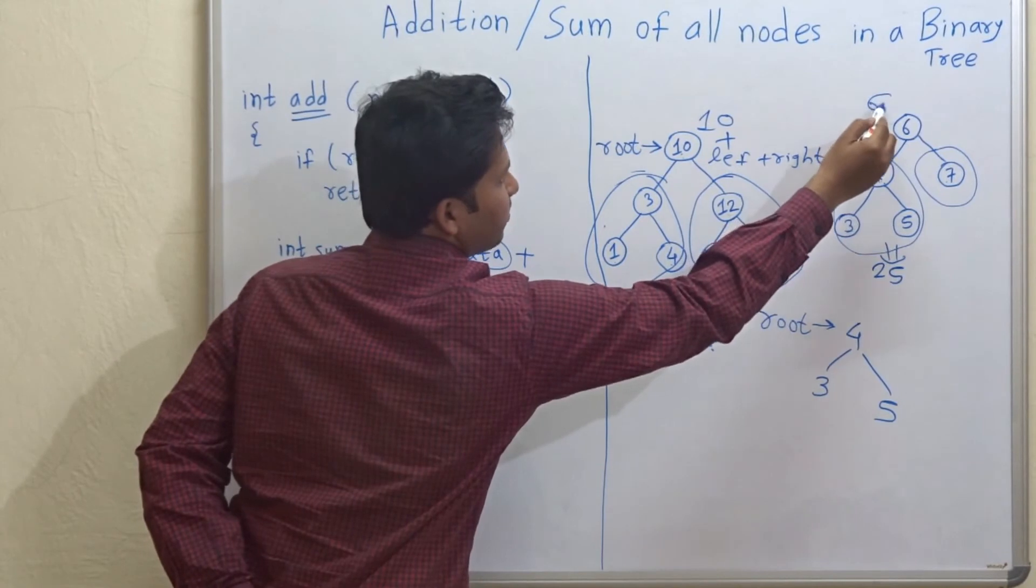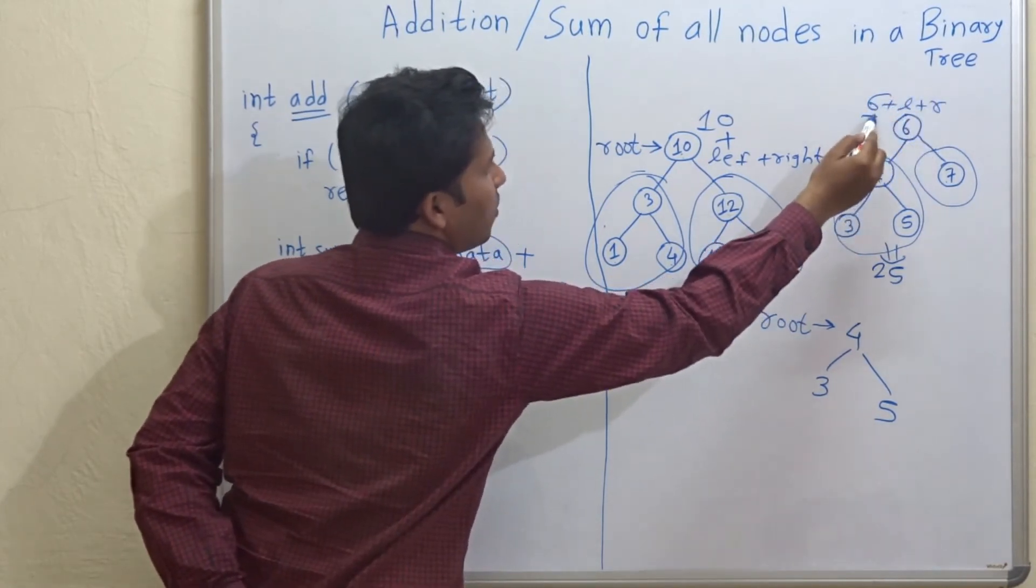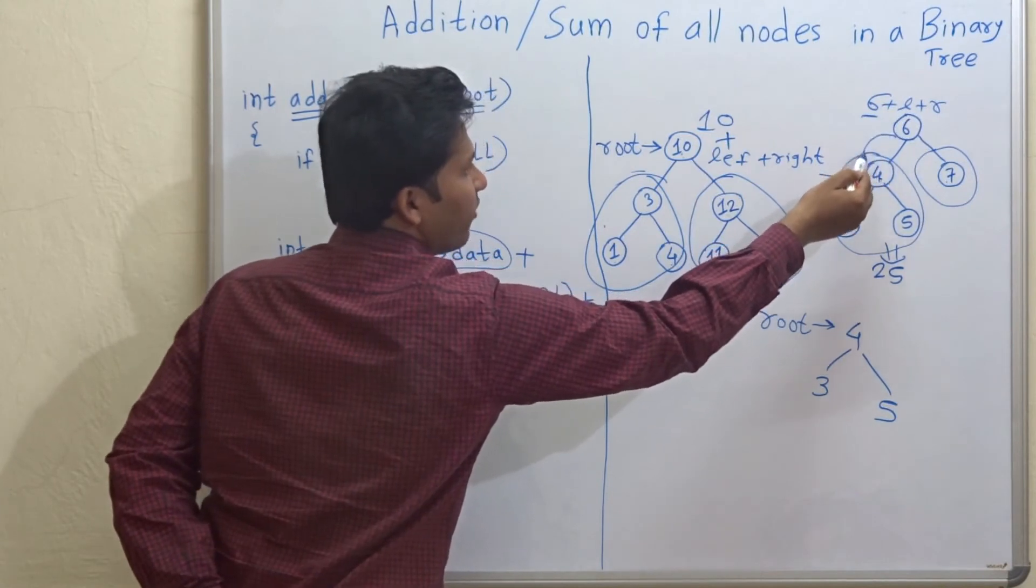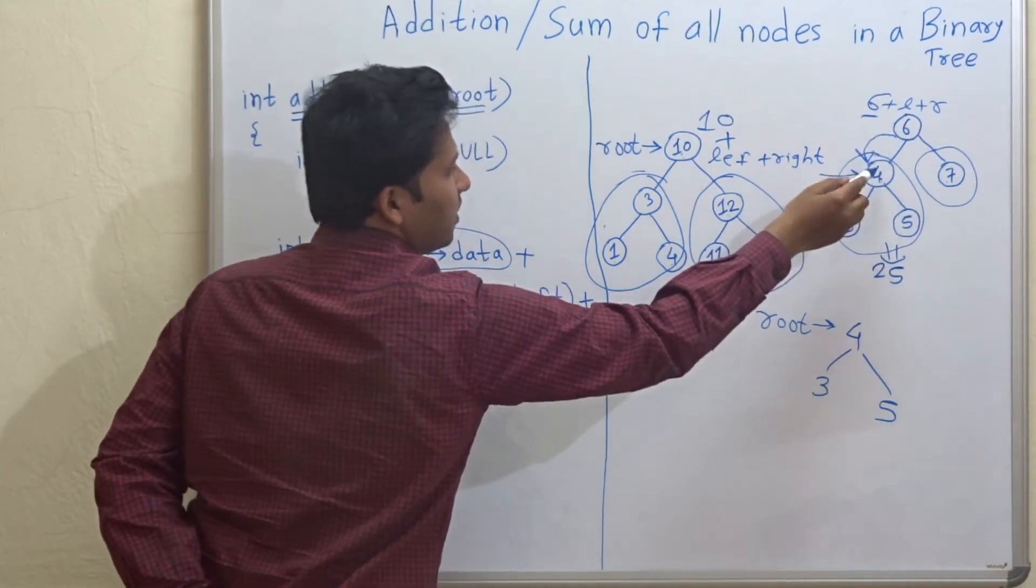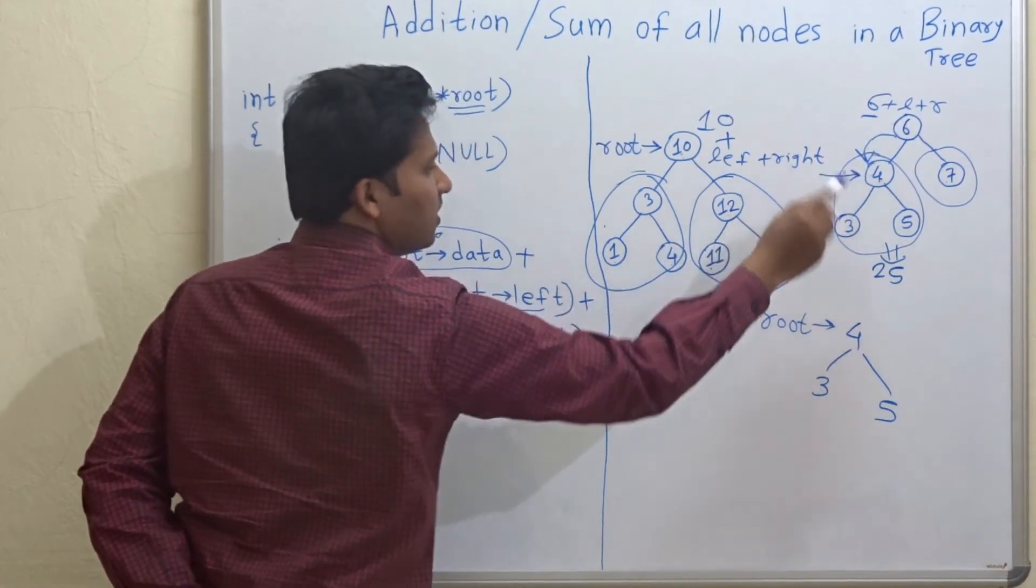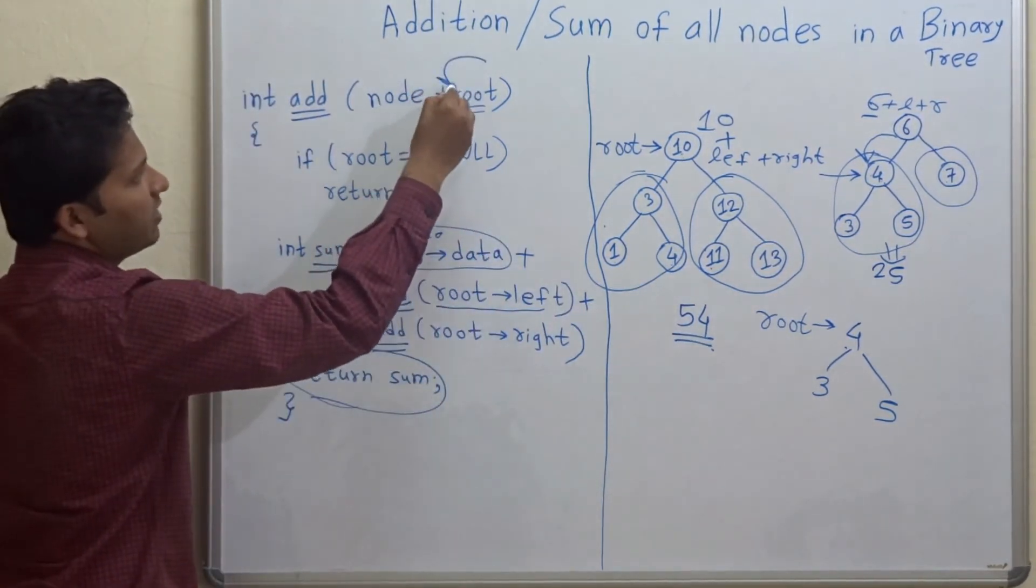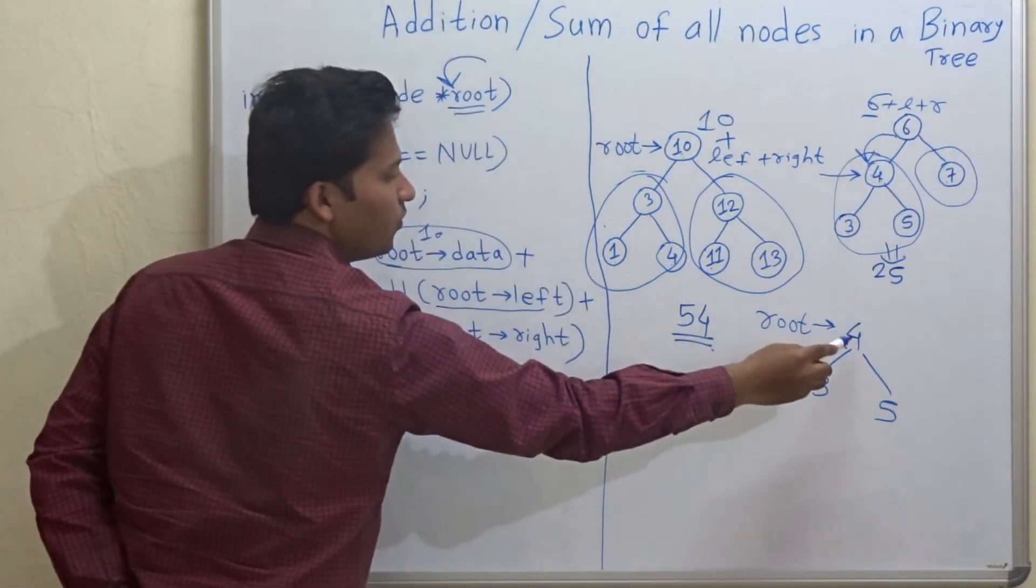Now, when six plus left sub tree plus right sub tree function was called, then we have passed the left node, left child of six, which is four and our root variable is now pointing to four.